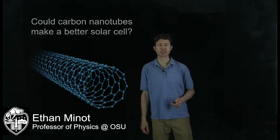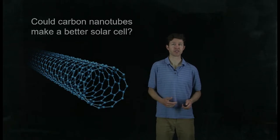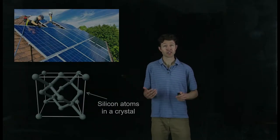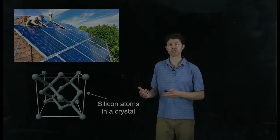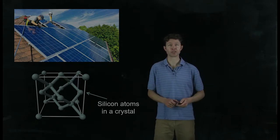My research group at Oregon State is interested in the applications of new materials. One of the questions we've asked ourselves is, could carbon nanotubes make a better solar cell? When you see solar cells on someone's roof, they're probably made out of silicon. The sunlight's been absorbed by this crystalline material and turned into electricity. But there are a lot of other materials that could be used to make solar cells.